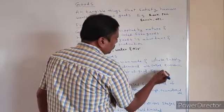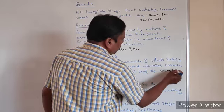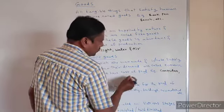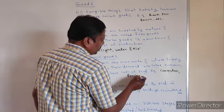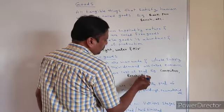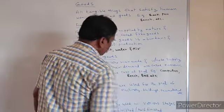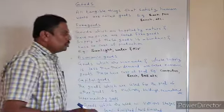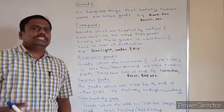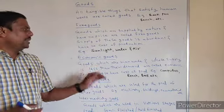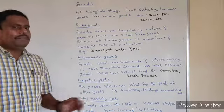Examples of economic goods include computers, pages, and books — you have to produce all of these. Whenever you produce them, only then are they available and only then can they satisfy your wants. All such goods come under economic goods.